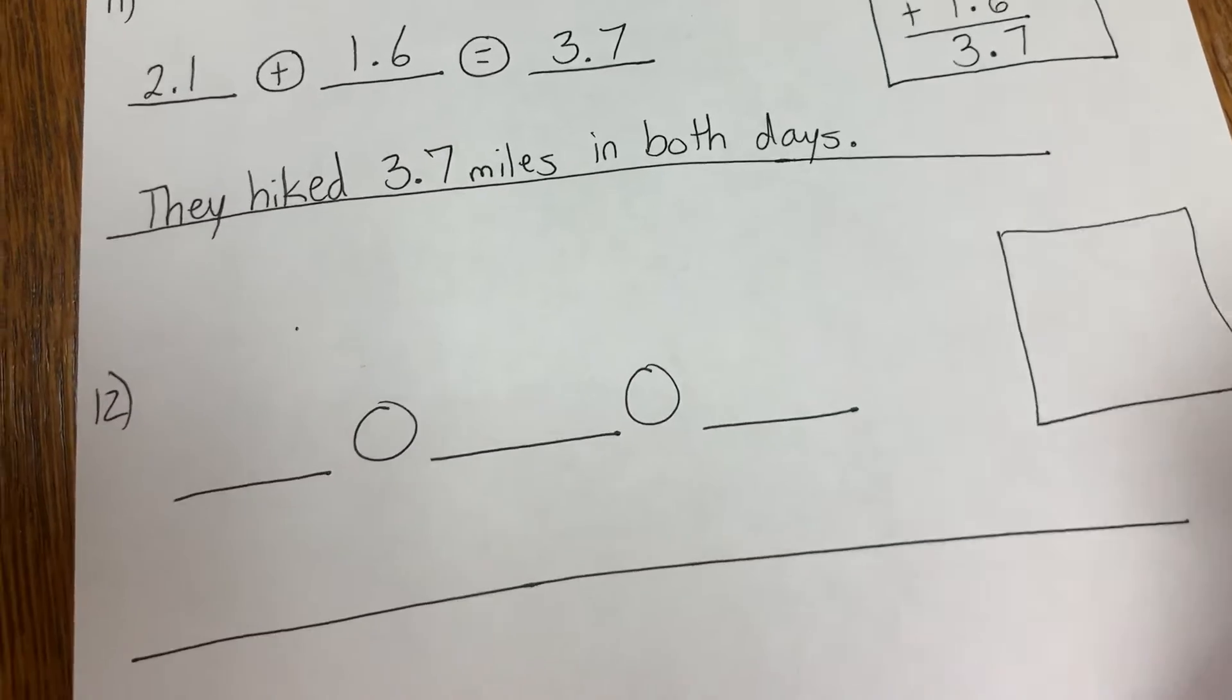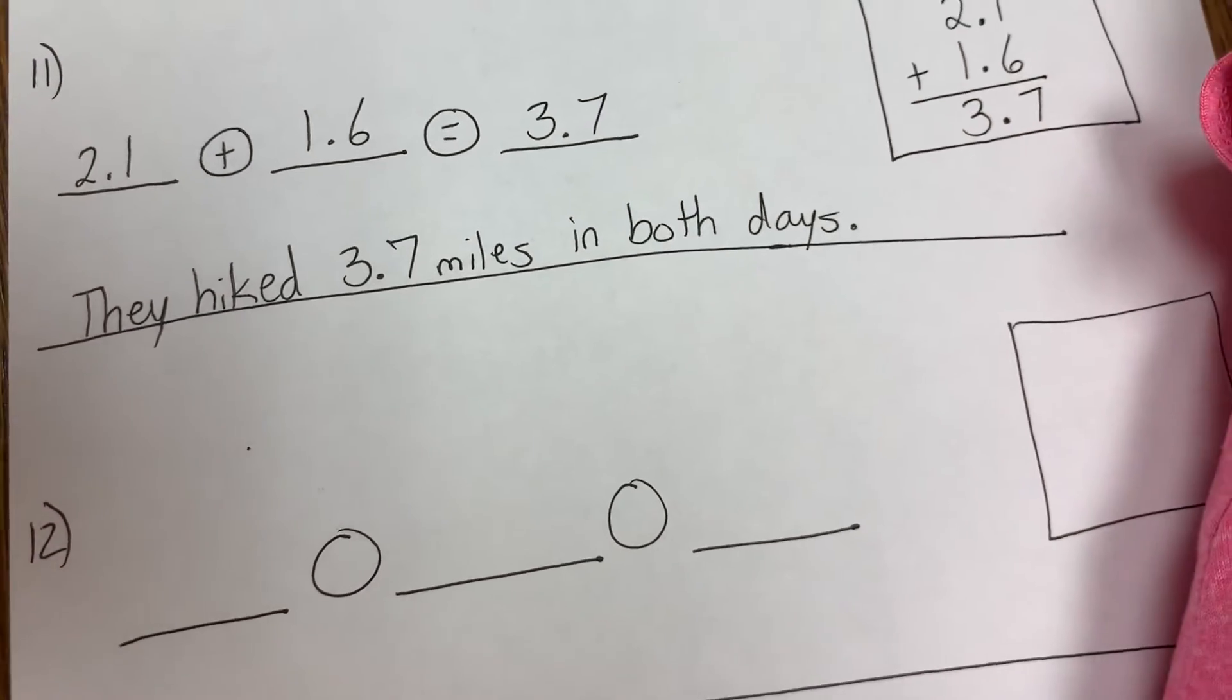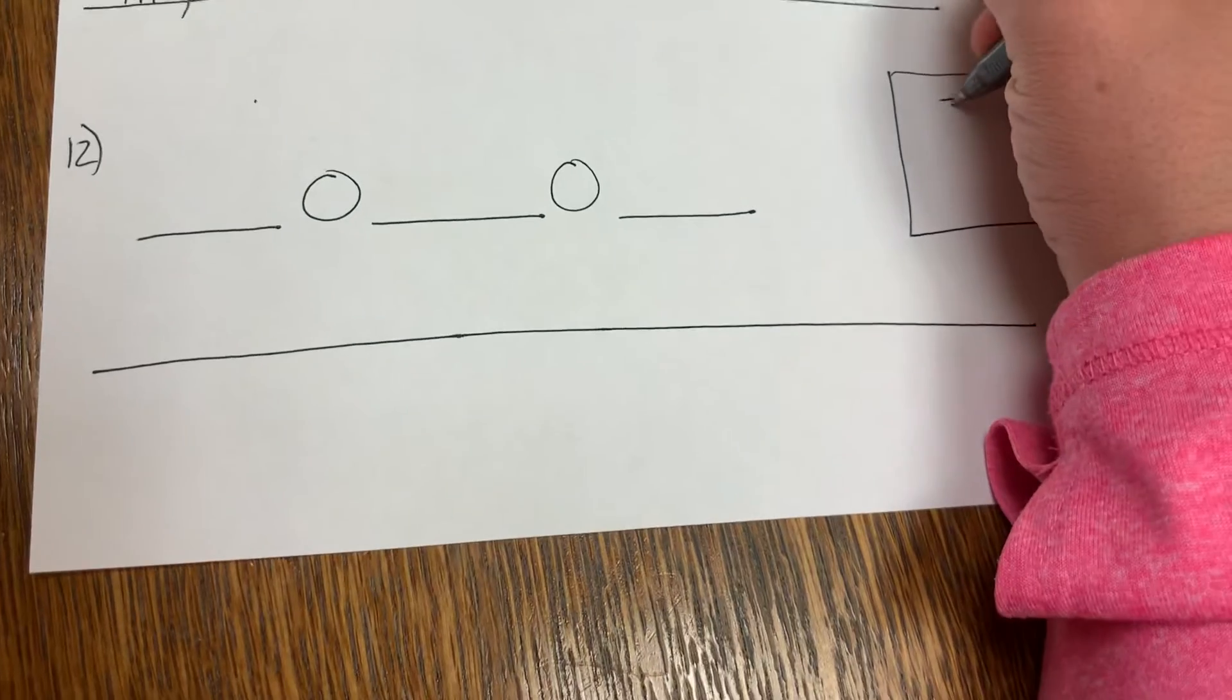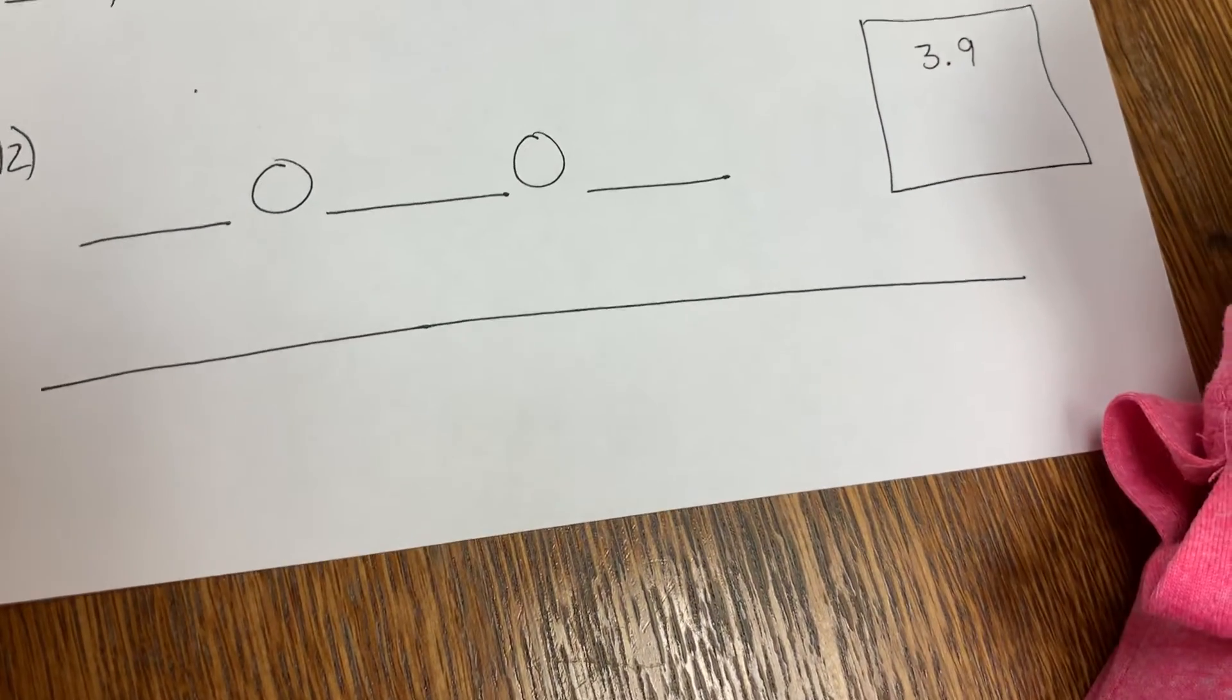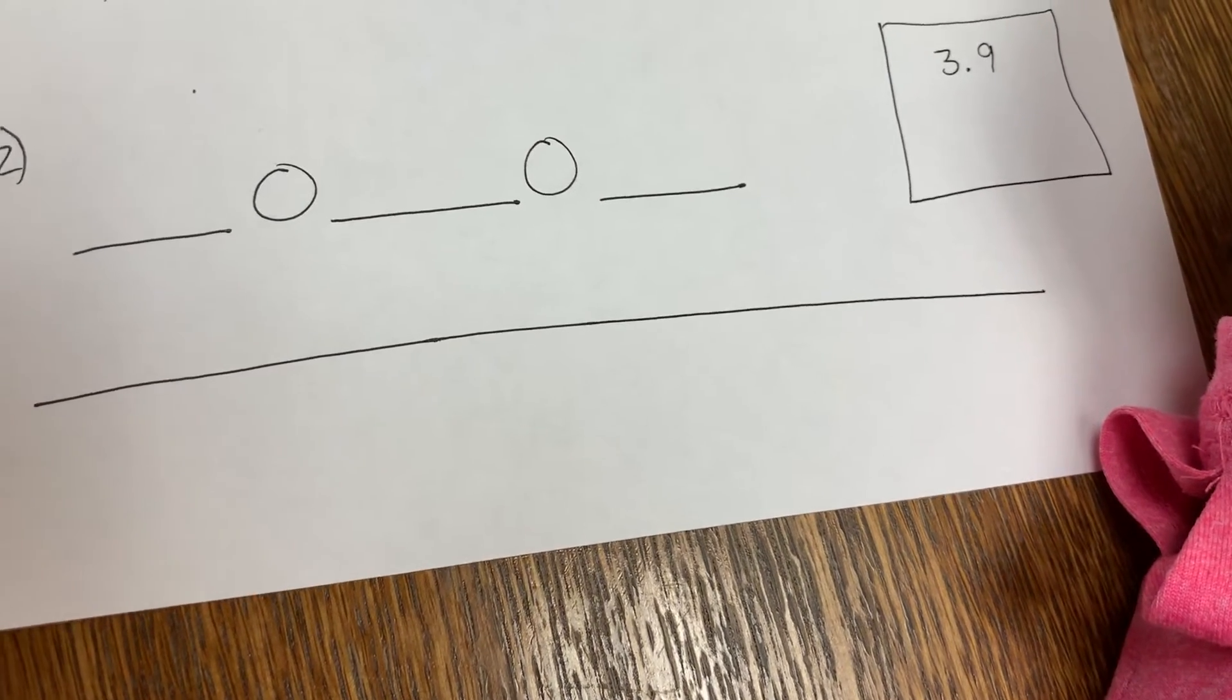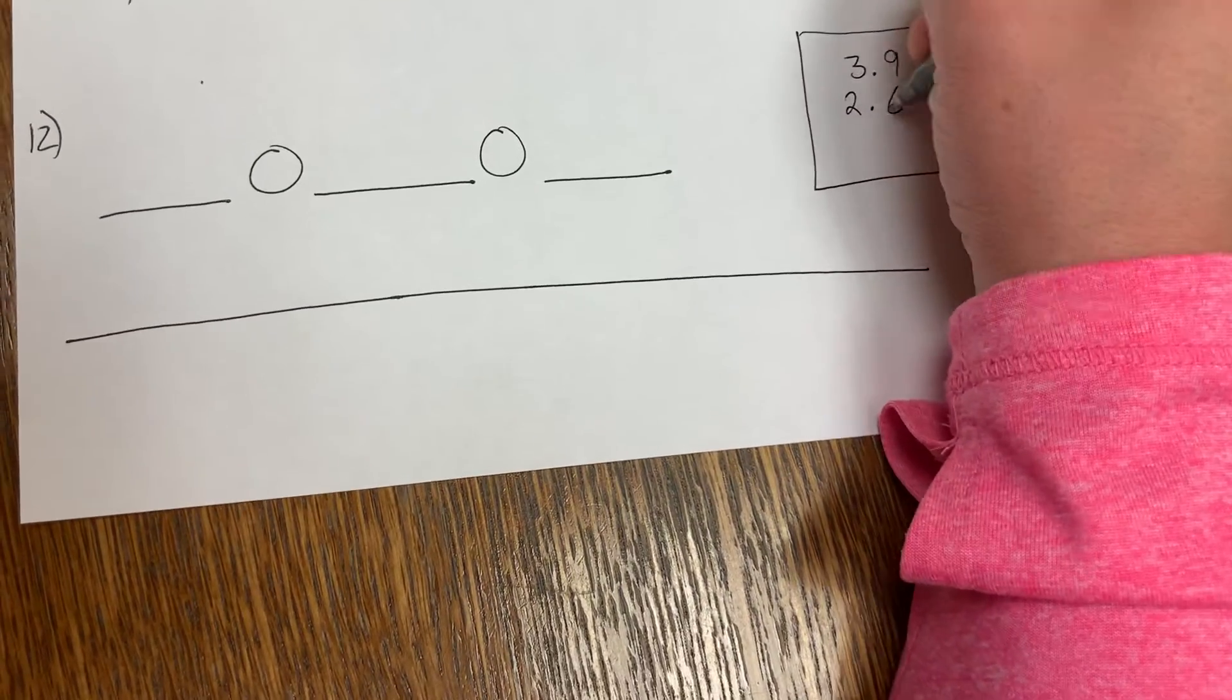Number 12 is another word problem. It says, In May, the city of Rapid City, South Dakota, received 3.9 inches of rain. I'm going to write that number in the box: 3.9. In June, the city received 2.6 inches of rain. How many inches of rain fell during both months? So the next month was 2.6 inches.